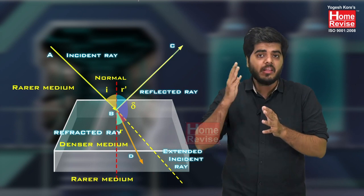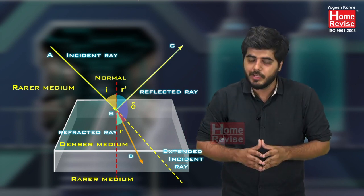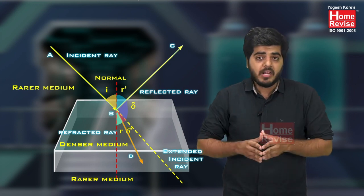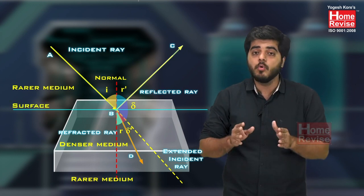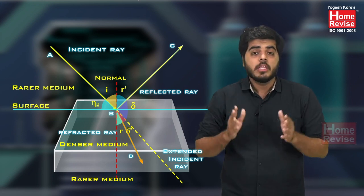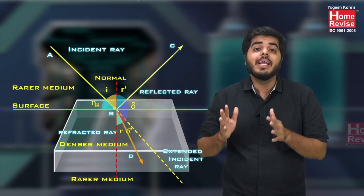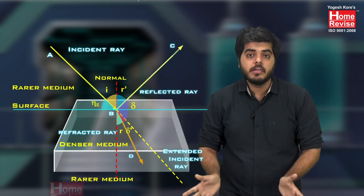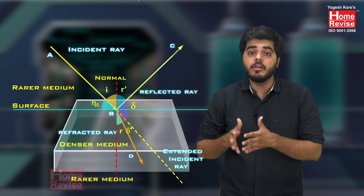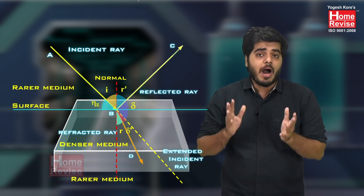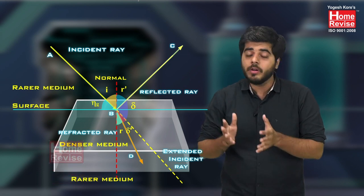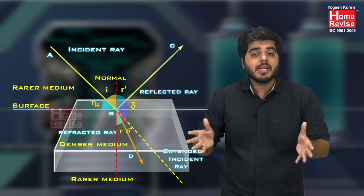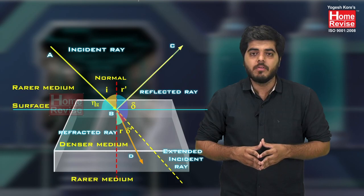The angle between the incident ray and the reflected ray is also an angle of deviation, denoted by delta' (δ'). The angle between the incident ray and the surface is called the glancing angle, denoted by theta-g (θg). With this, we have completed the entire ray diagram showing how an incident ray gets partially reflected and partially refracted.